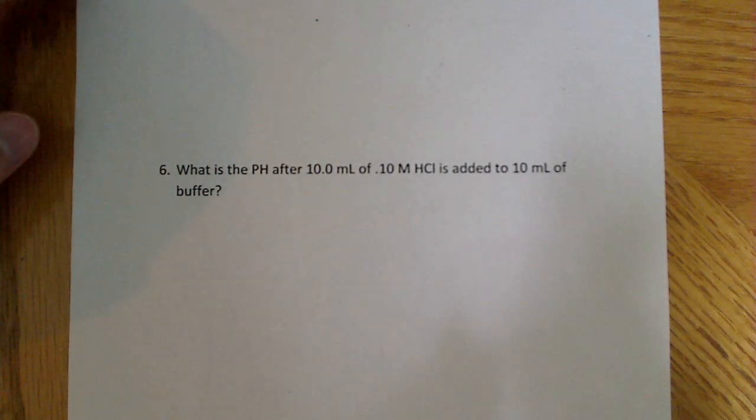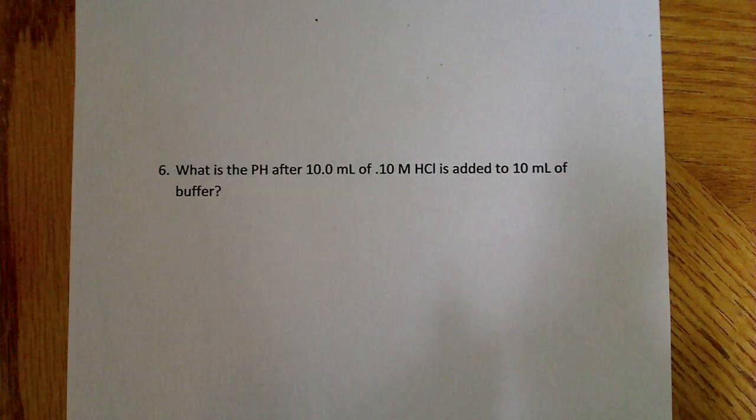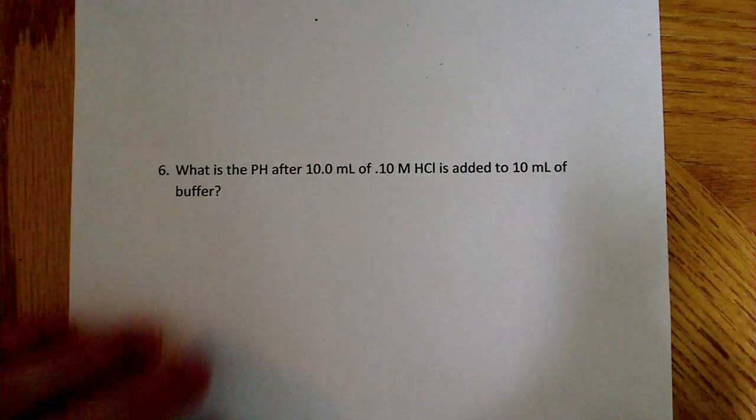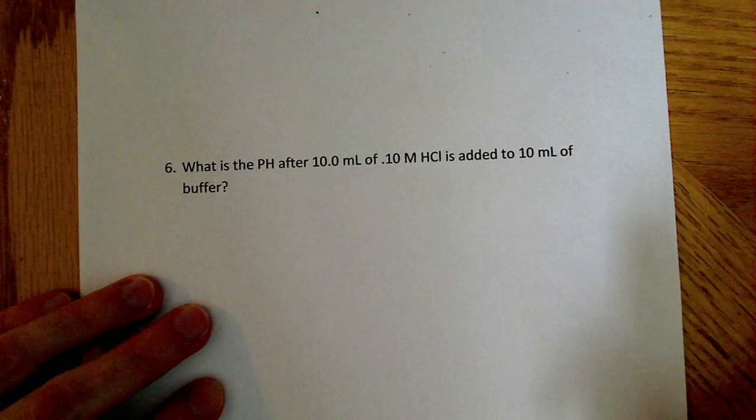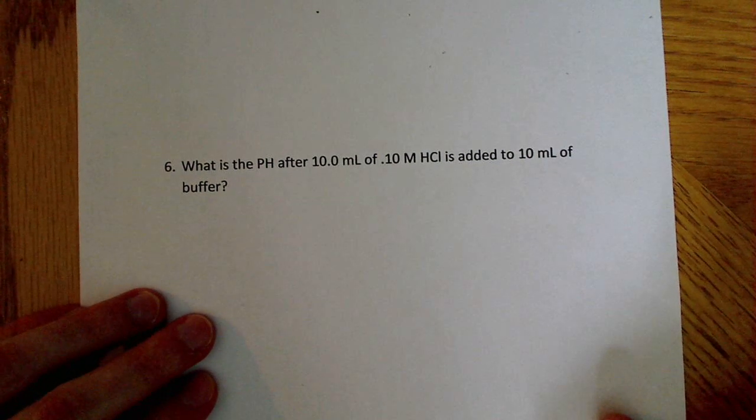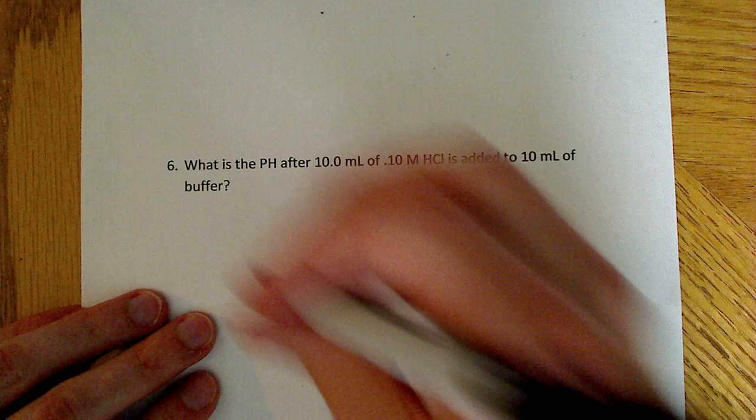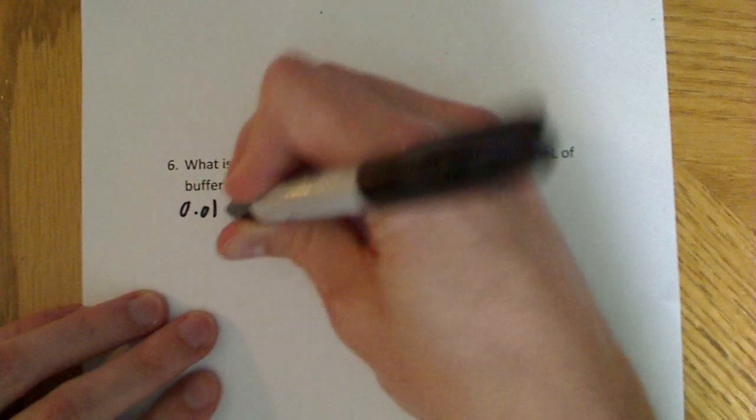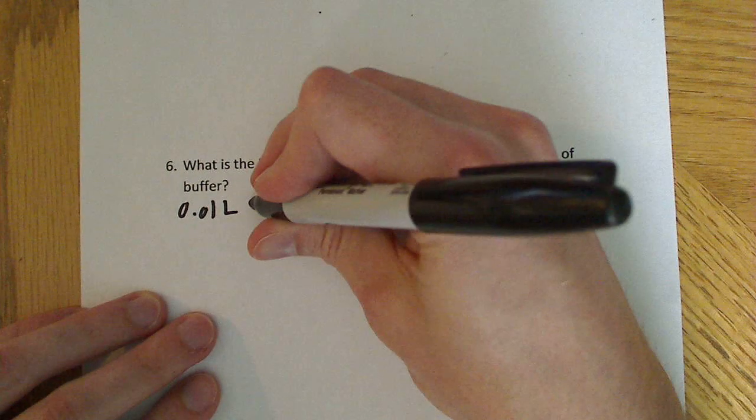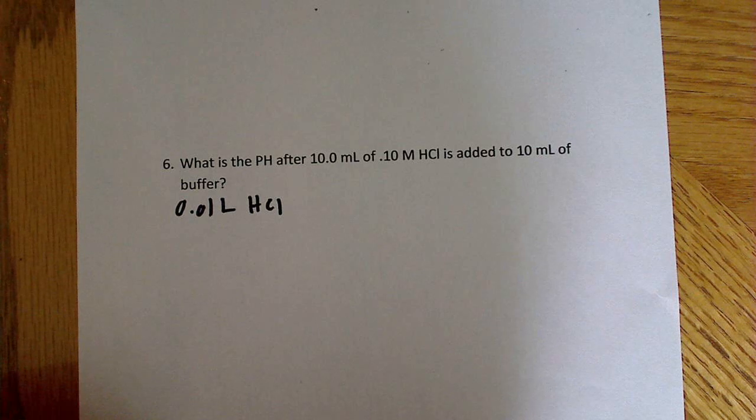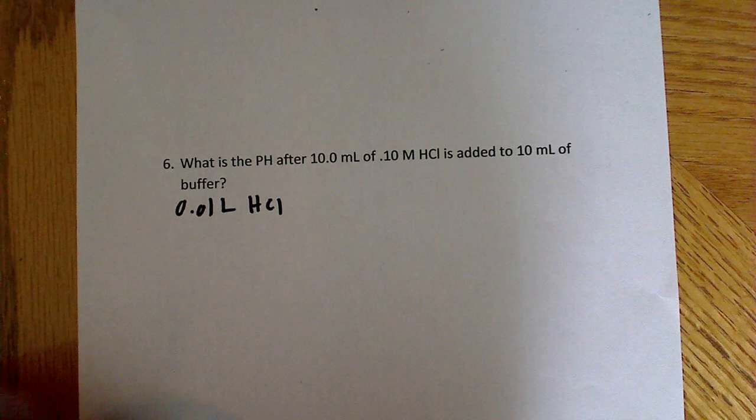Now I've got one more problem here which is very similar to the second problem, the last one we just did. And again, I'm going to go through basically the exact same process for this one. So we can see that it says what is the pH after 10 milliliters of 0.1 mole HCl is added to 10 milliliters of buffer. So the first thing I do, again, is convert everything to liters. So if we're adding 10 milliliters of 0.1 mole HCl that winds up being 0.01 liters.